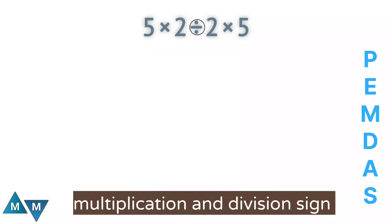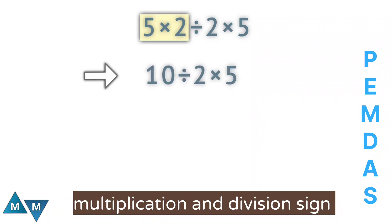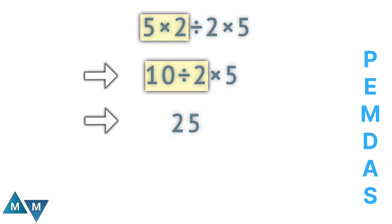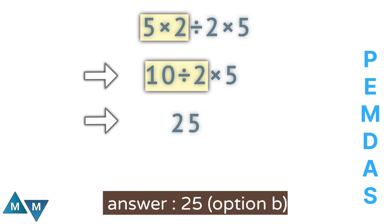Focus on the first two terms: 5 times 2 can be written as 10. Now the expression becomes 10 divided by 2 multiplied by 5. 10 divided by 2 is 5. So the expression becomes 5 times 5, which equals 25. This is our final answer.